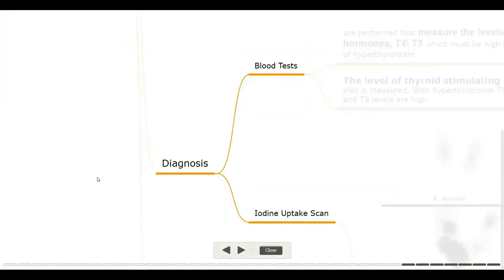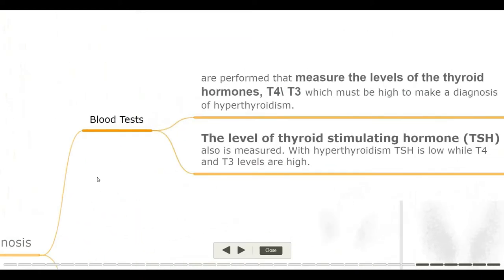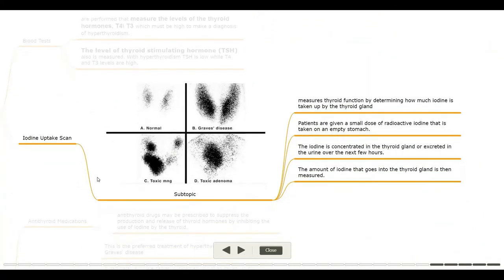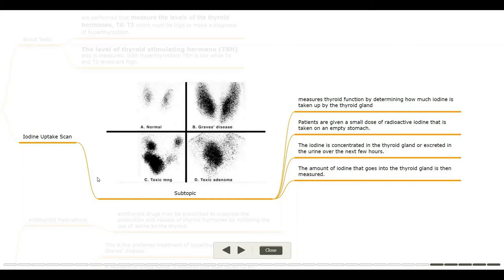Diagnosis — blood tests: blood tests measure the levels of thyroid hormones T4 and T3, which must be high to make a diagnosis of hyperthyroidism. The level of thyroid-stimulating hormone (TSH) is also measured; with hyperthyroidism, TSH is low while T4 and T3 levels are high. Iodine uptake scan measures thyroid function by determining how much iodine is taken up by the thyroid gland.